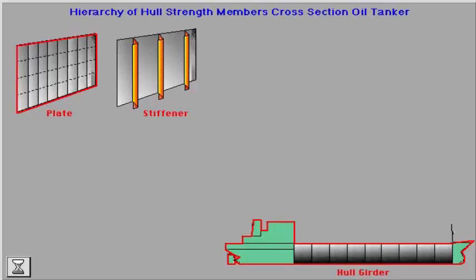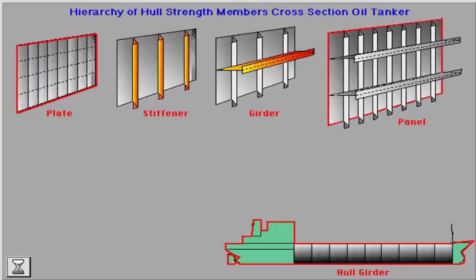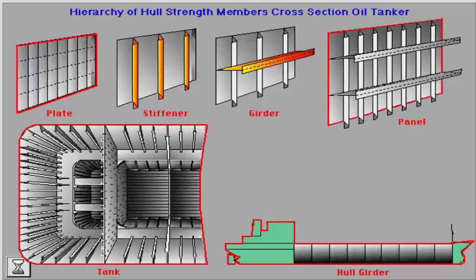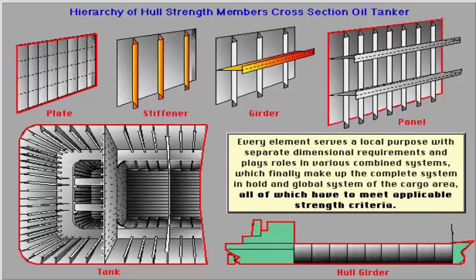In the system of structural elements of the ship hull, a plate represents the lowest and the hull girder the highest level. In between there are in raising order: stiffener, girder, panel, and tank.